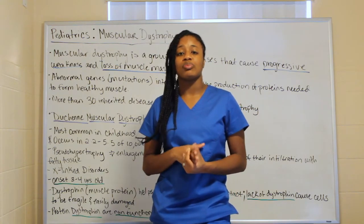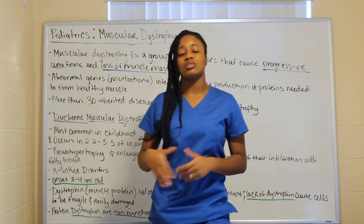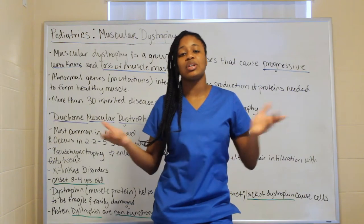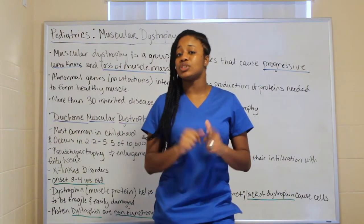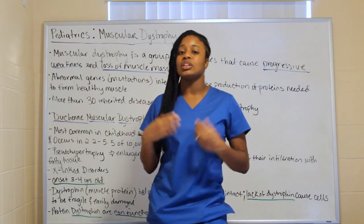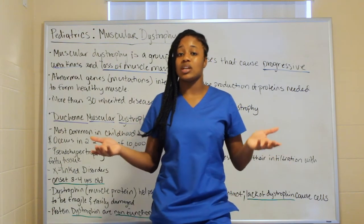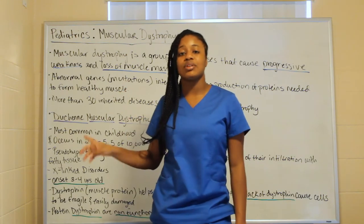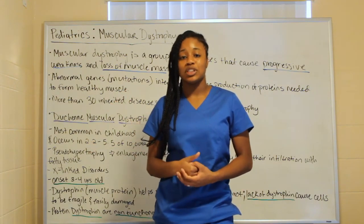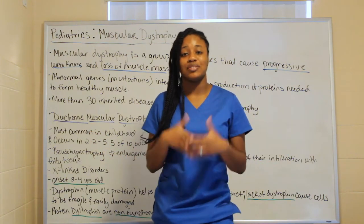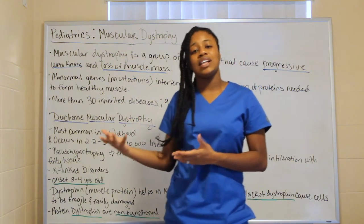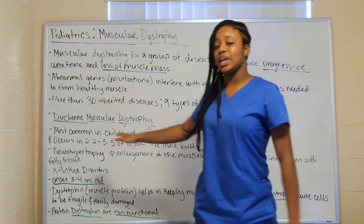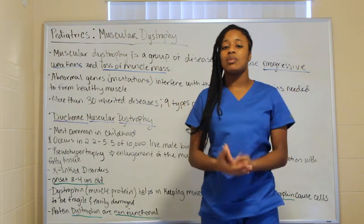A female has two X's, so even if the mother's X is bad, the other X may be fine — making her just a carrier rather than exhibiting full signs and symptoms. For a female to have muscular dystrophy, she would need two bad X chromosomes. So anytime you see X-linked disorders — not just with muscular dystrophy — think about the mother and think about the males being affected.